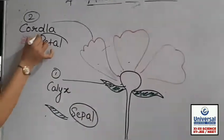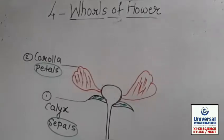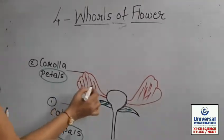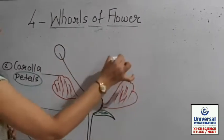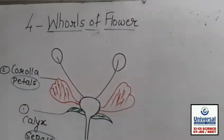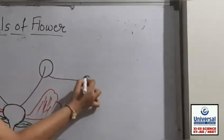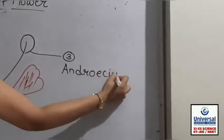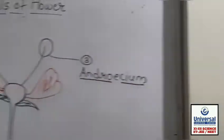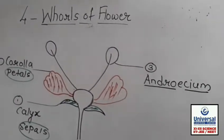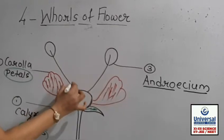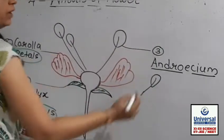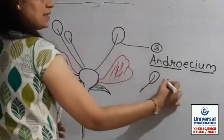The third layer of the flower, after calyx and corolla, is called androecium. If you break the word: androecium. The third layer is androecium. And if I take a single structure out of this layer, that single structure is called a stamen.